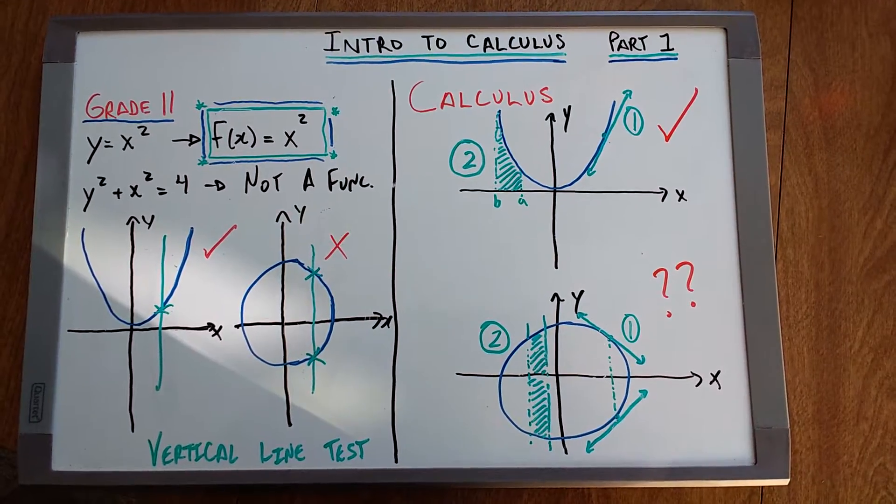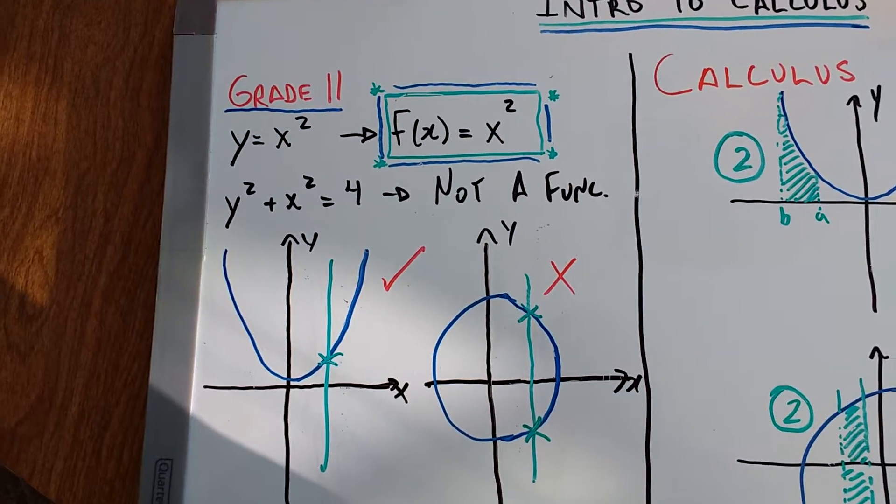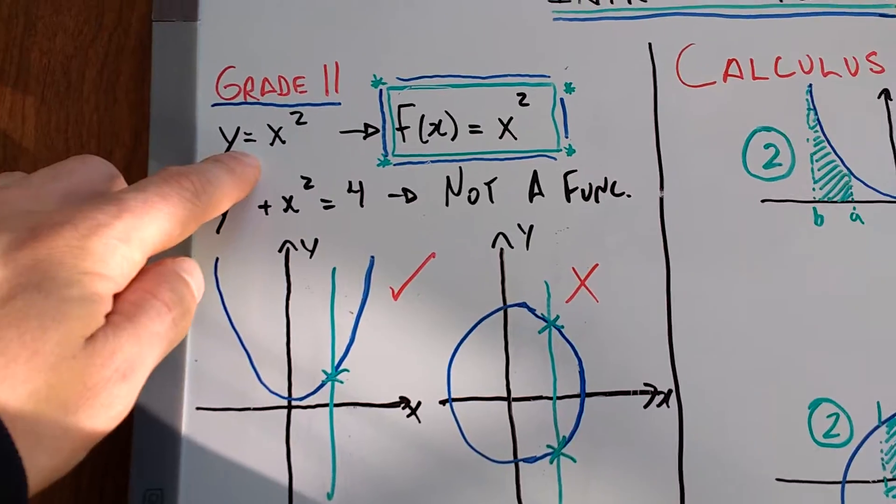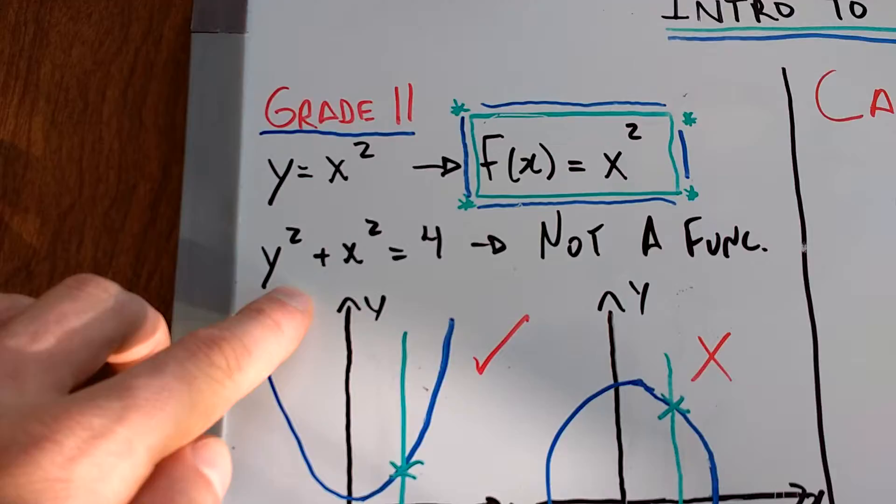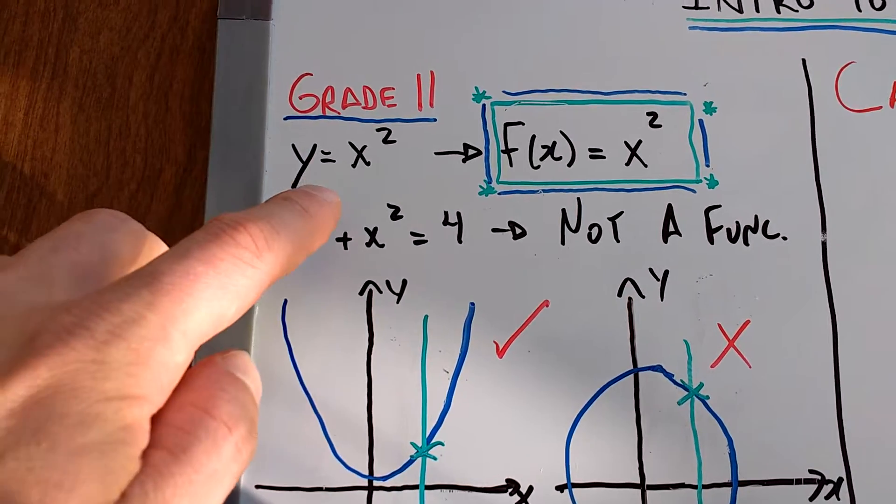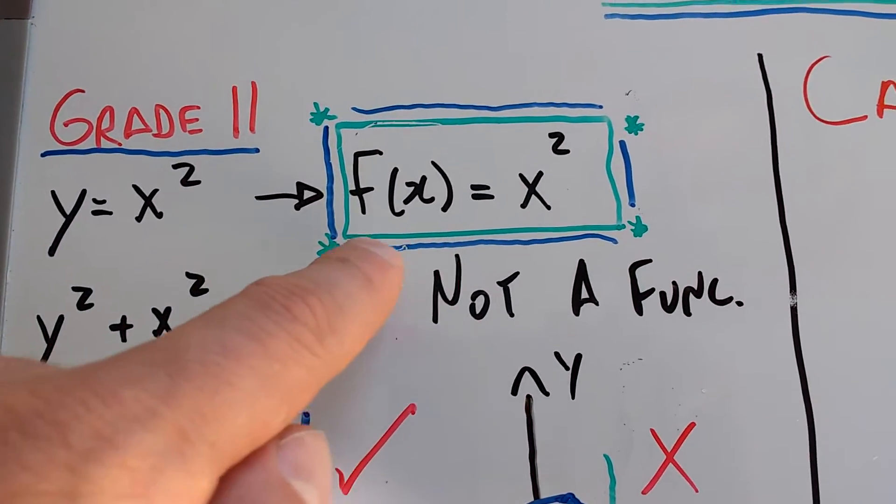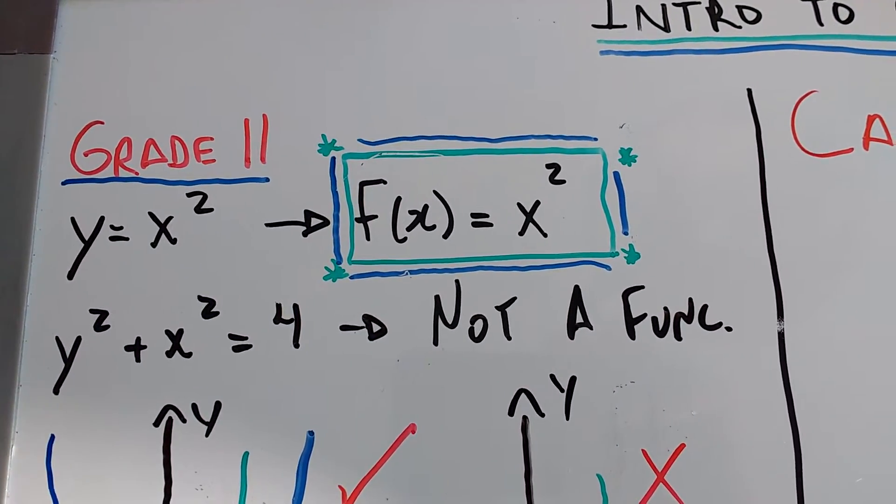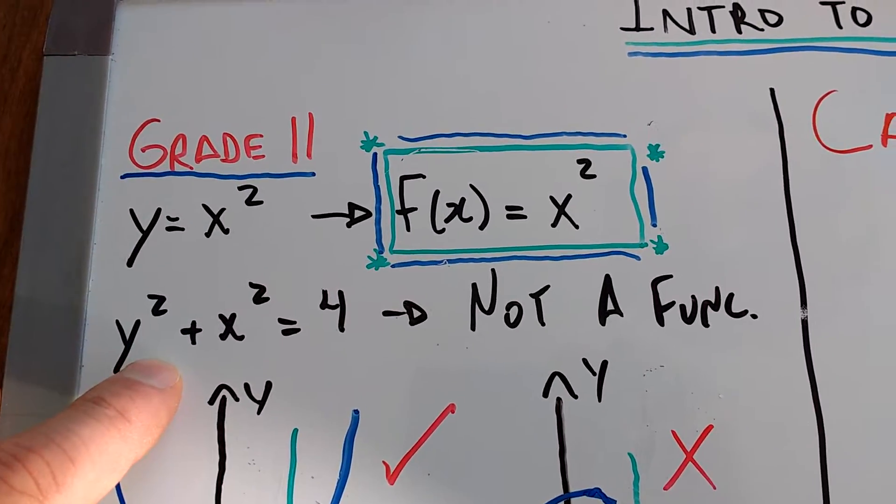So the first thing I'd like to introduce is this idea of a function. In grade 11, we started, while in grade 10 we looked at equations like y equals x squared, y squared plus x squared equals 4. This, of course, is a circle with a radius of 2, and this is just a parabola. And we got introduced to this right here, this function notation, f of x. And we learned that this is a function, and this is not a function.